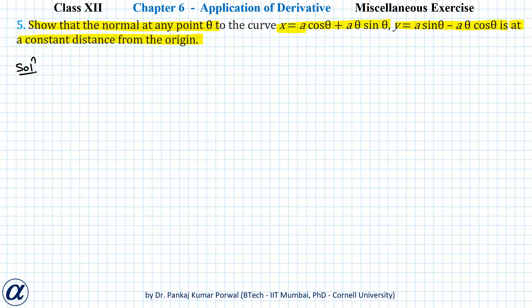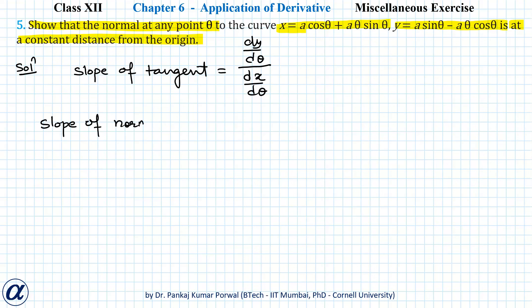We know that for a curve given in parametric form, the slope of the tangent is dy/dθ upon dx/dθ. So the slope of the normal will be minus 1 upon slope of tangent, which equals minus dx/dθ upon dy/dθ.